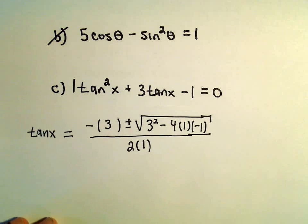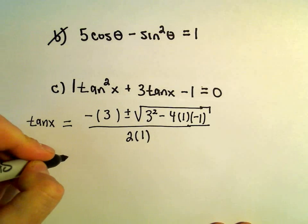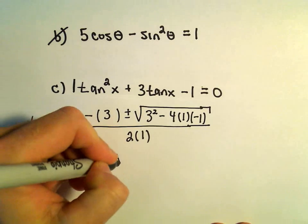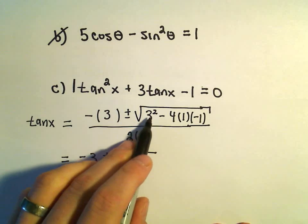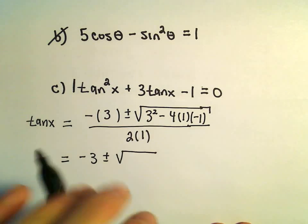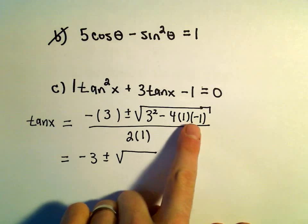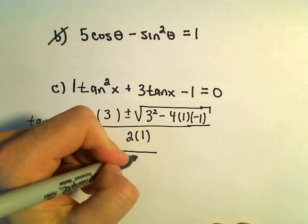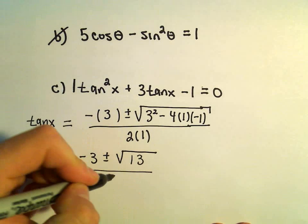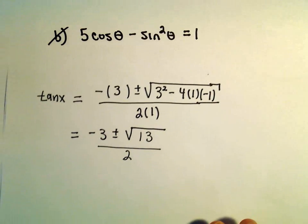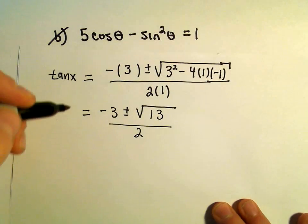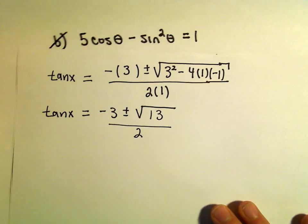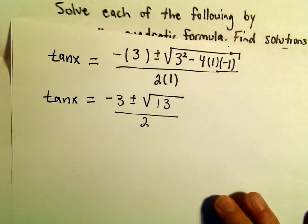Now we simplify this down. We've got negative 3 plus or minus the square root of — 3 squared is 9, and negative 4 times negative 1 gives positive 4, so 9 plus 4 is 13 — all over 2. So we've got tangent x equals negative 3 plus or minus root 13 over 2.